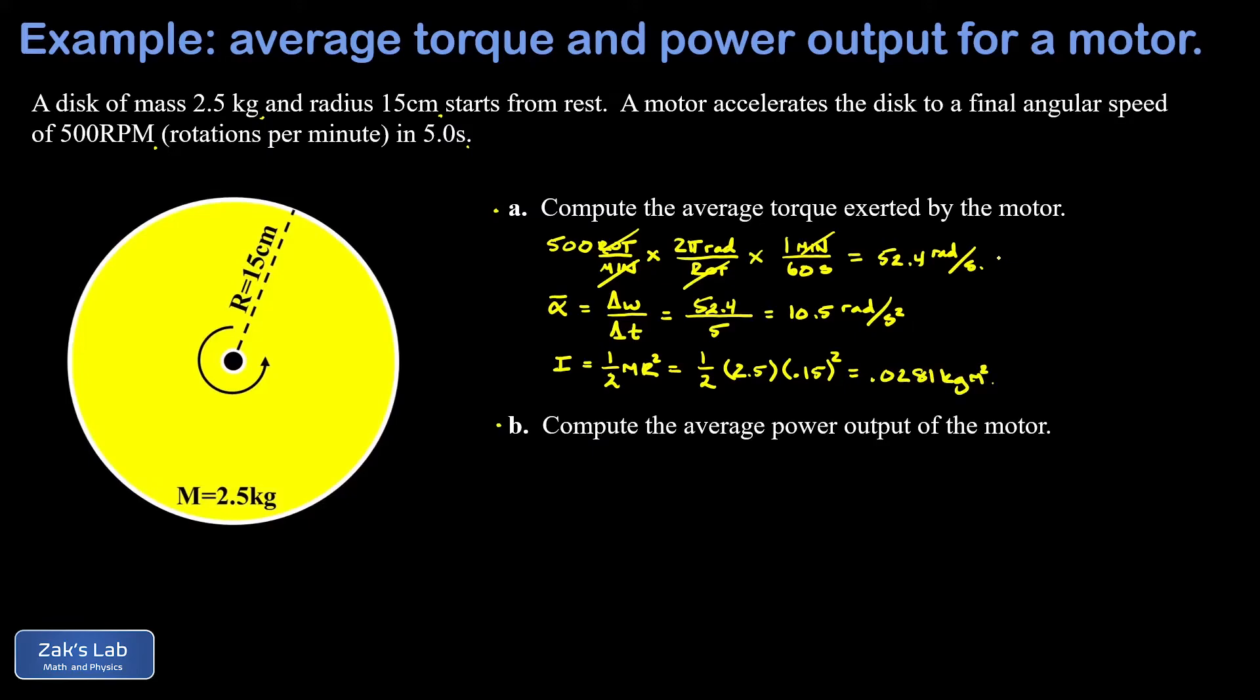Now again, the point of all this prep work is that we're going to plug into the rotational equivalent of Newton's second law. That's τ = Iα. The torque is the analog for force, moment of inertia is the analog for mass, angular acceleration is the analog for acceleration. So this is really just a rotational version of F = ma.